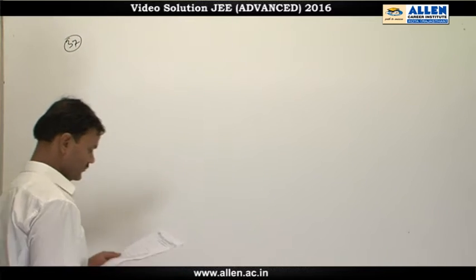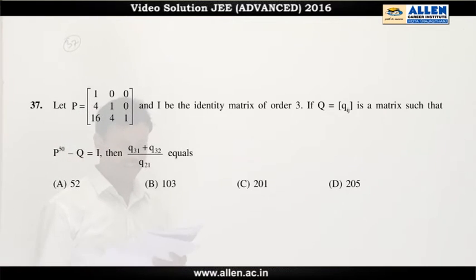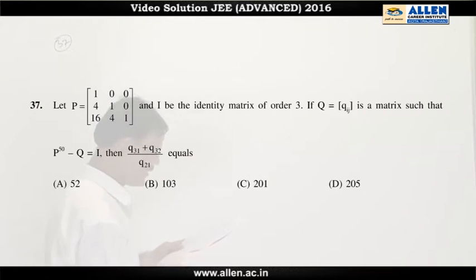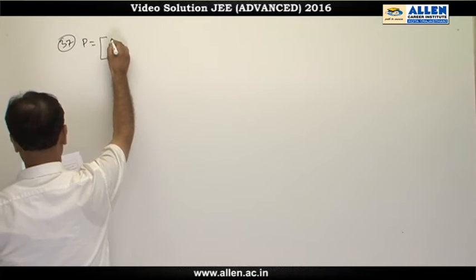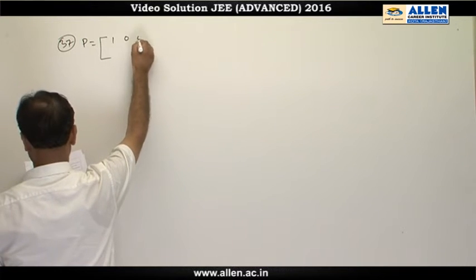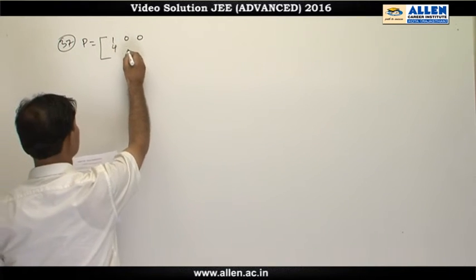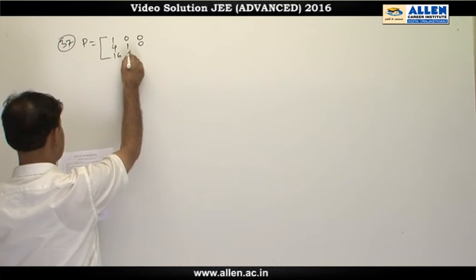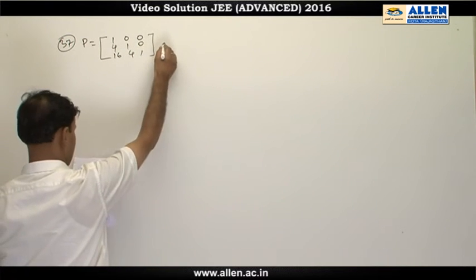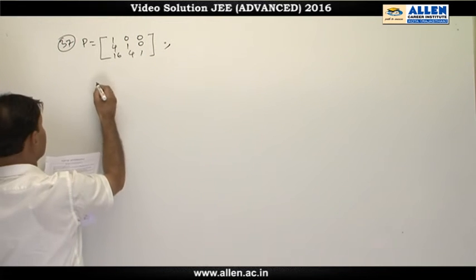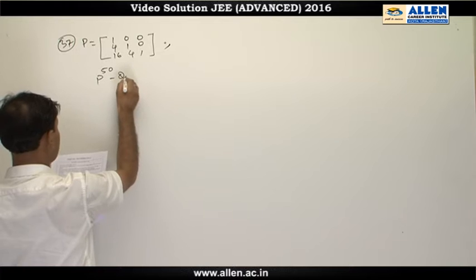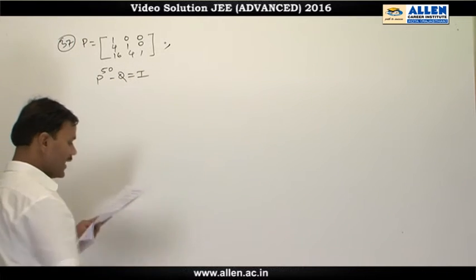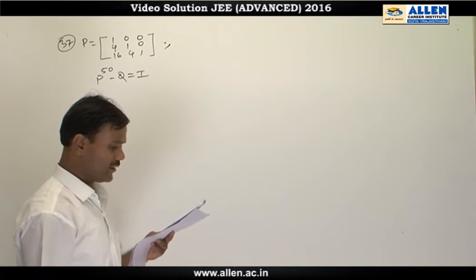Question 37: We are given a matrix P and I is the identity matrix of order 3. The elements in the first row of P are 1, 0, 0; second row 4, 1, 0; third row 16, 4, 1. We are given the relation P to the power 50 minus matrix Q equals the identity matrix.